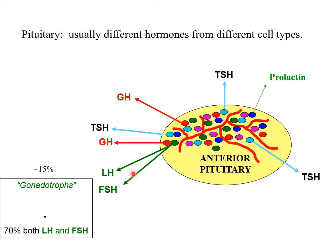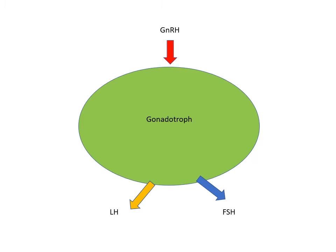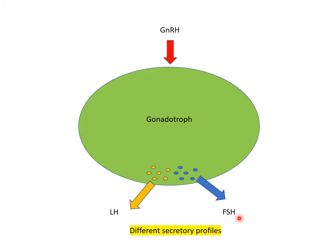About 15% or so of the total population of pituitary cells are gonadotrophs, and of those, 70% contain both LH and FSH and are believed to secrete both. Those two hormones seem to exist within the gonadotroph in different secretory vesicles. So given that situation, and the cell being stimulated by GnRH coming down the portal blood vessels from the median eminence, how can that single releasing hormone control the differential secretion of LH and FSH?